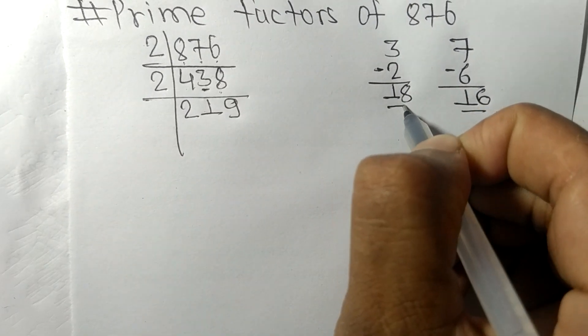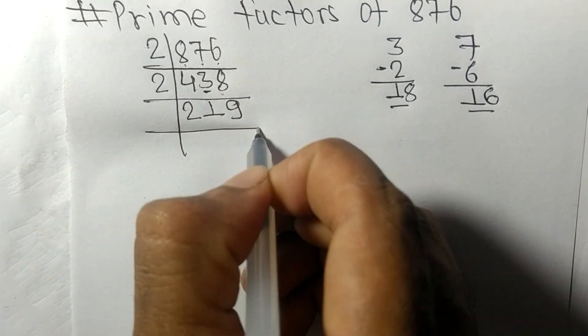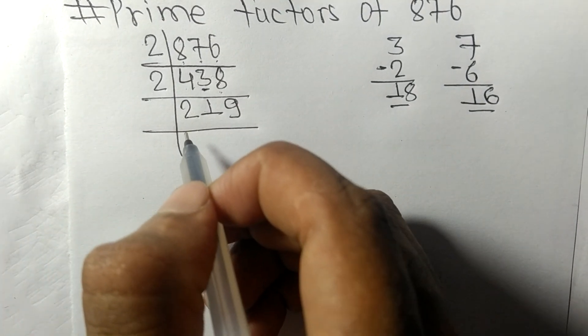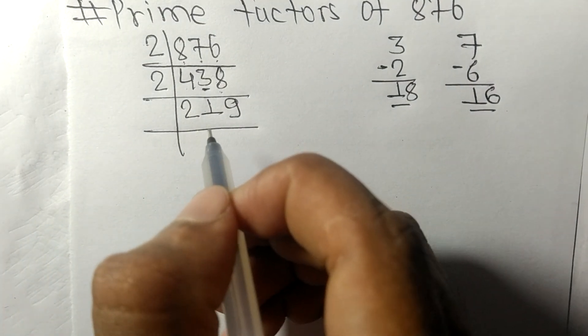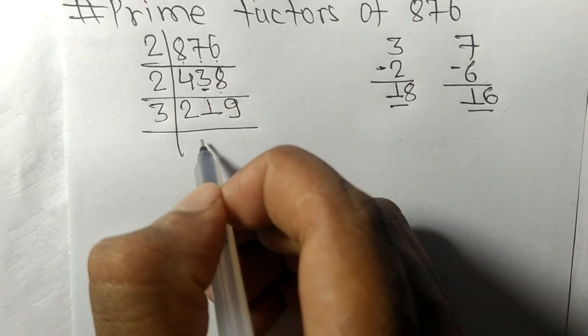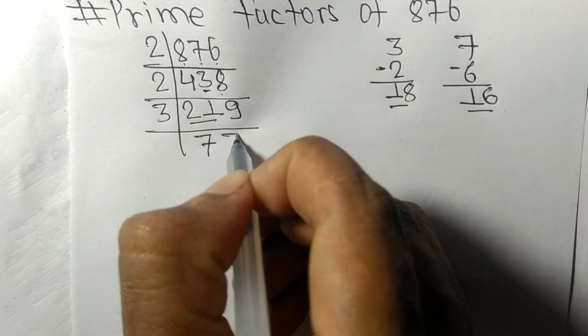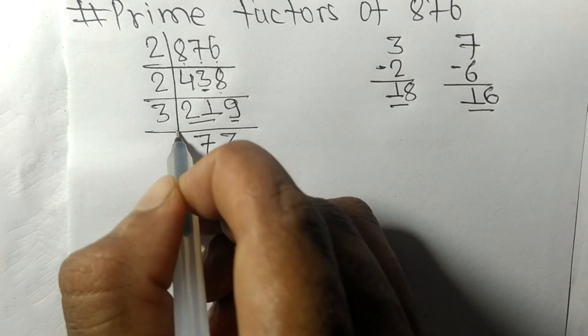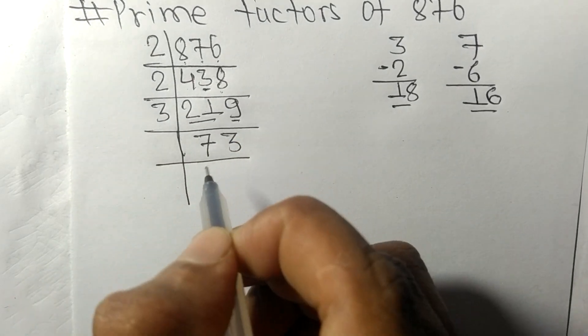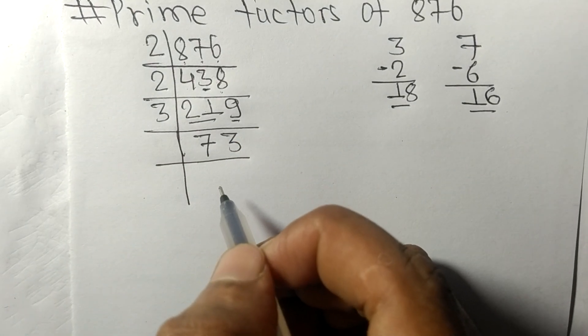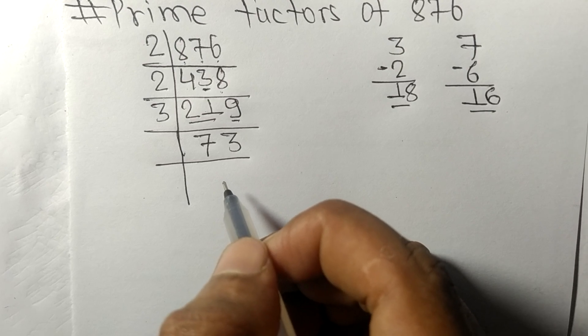Now we got 219 which is exactly divisible by three. Three times seven is 21. Three times three is nine. Now we got 73 which is our prime number, so it is exactly divisible by 73 only.